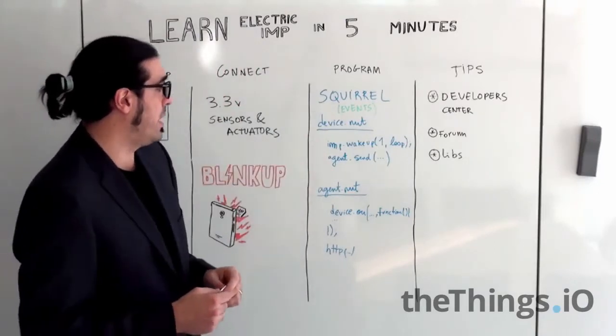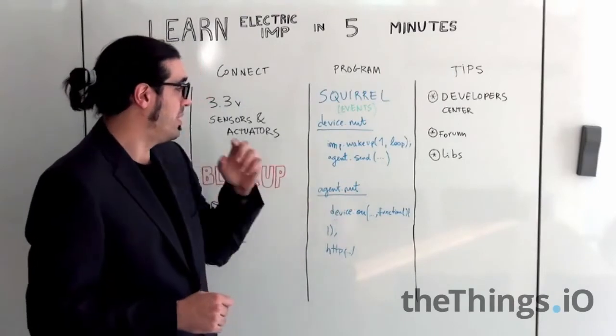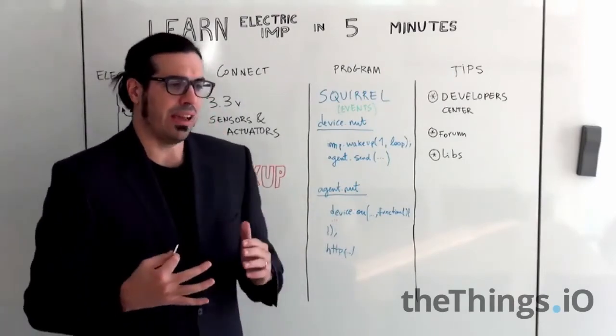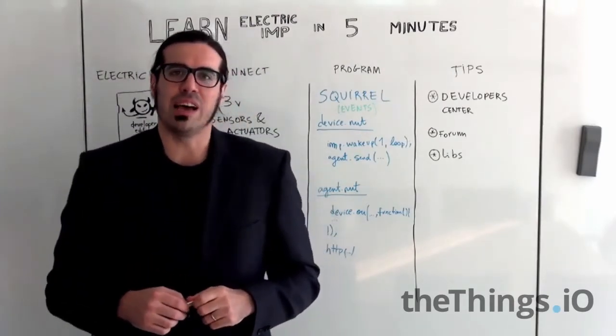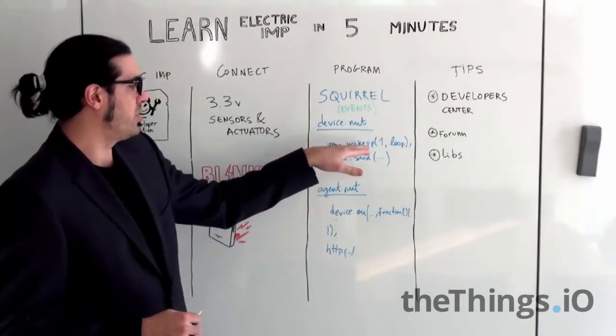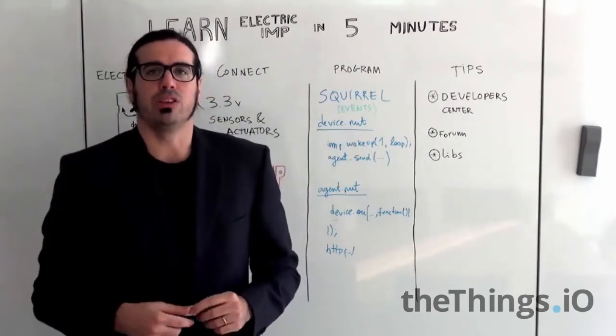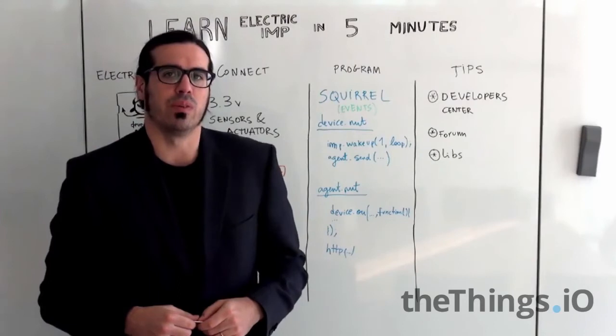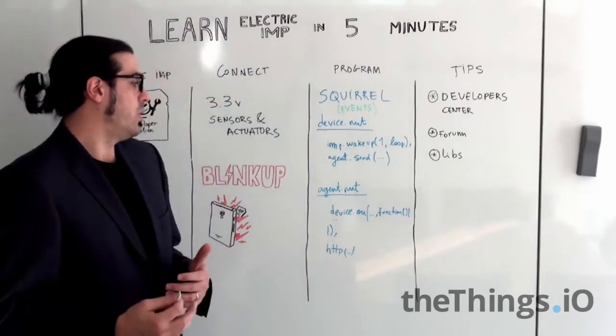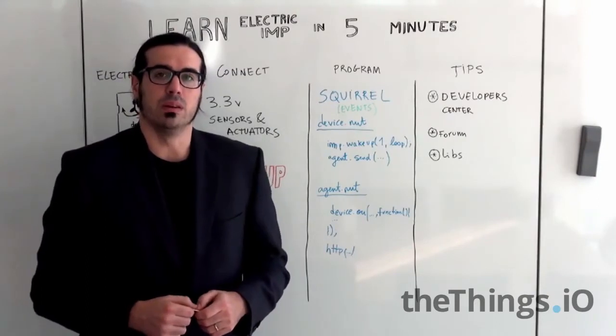So for programming the device it's called NAT for the squirrels. For example if you want to do it kind of Arduino style if you are coming from Arduino, there are some operations like wake up where you wake up every second and you are calling the same operation like loop operation that we have on Arduino. If not there are other operations that are just waking up the device.